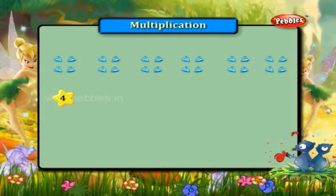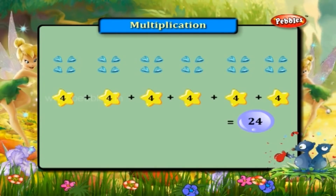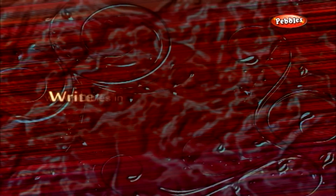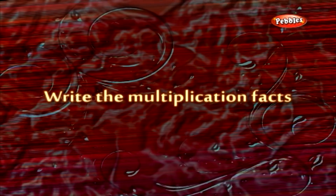Four plus four plus four plus four plus four plus four plus four is equal to twenty-four. Six into four is equal to twenty-four. Write the multiplication facts.